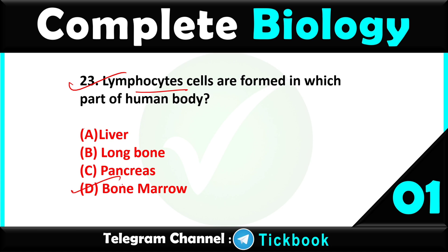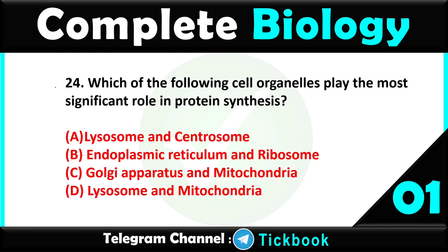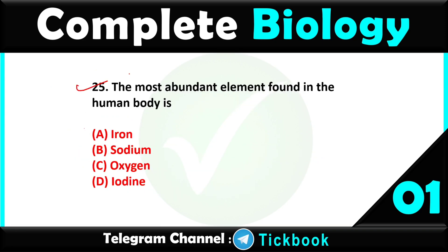Question number twenty-four: which of the following cell organelles plays the most significant role in protein synthesis — option number B is the correct answer: endoplasmic reticulum and ribosome. Question number twenty-five: the most abundant element found in the human body is — option number C is the right answer: oxygen.